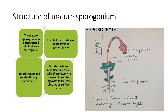Sometimes there are transfer cells which increase the absorption surface area and also help in absorption of water and solutes. These travel through the seta via conducting tissue toward the capsule, where formation of spores occurs.